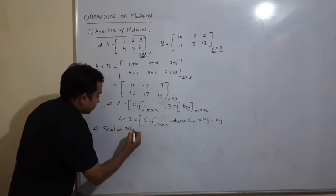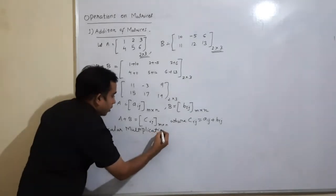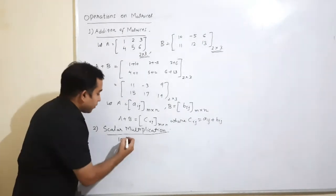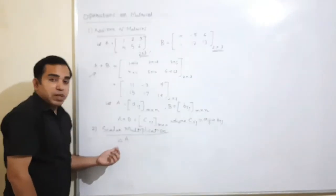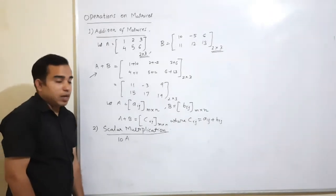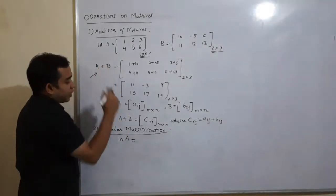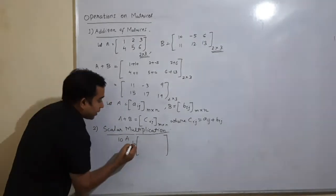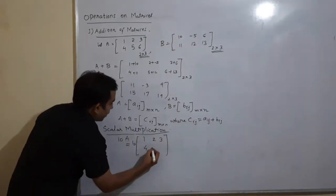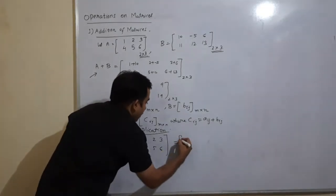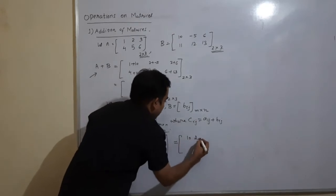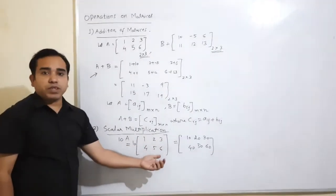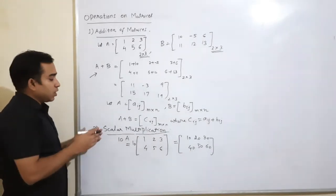The next operation is scalar multiplication. Scalar means numbers — for our syllabus, scalar means real numbers. Suppose there is a number 10 and a matrix A; when we multiply a number with a matrix we call it scalar multiplication. Taking A from the previous example, 10A is defined by multiplying 10 into all the entries of matrix A, giving us [10 20 30 / 40 50 60].